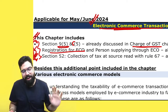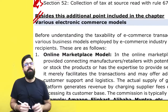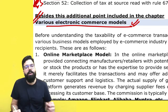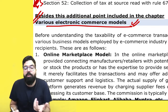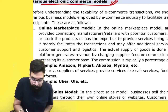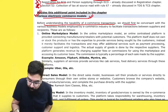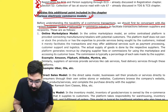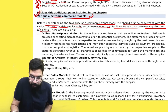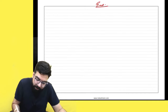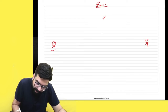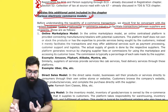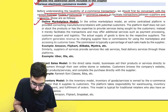One small additional point found in the e-commerce chapter: there are various kinds of e-commerce models. I've written them down so that if they ask you for a three-mark question on what are the various kinds of e-commerce models, you can answer. Before understanding the taxability of e-commerce, we should be conversant with the various basic business models employed by the e-commerce industry to facilitate transactions between supplier and recipient.